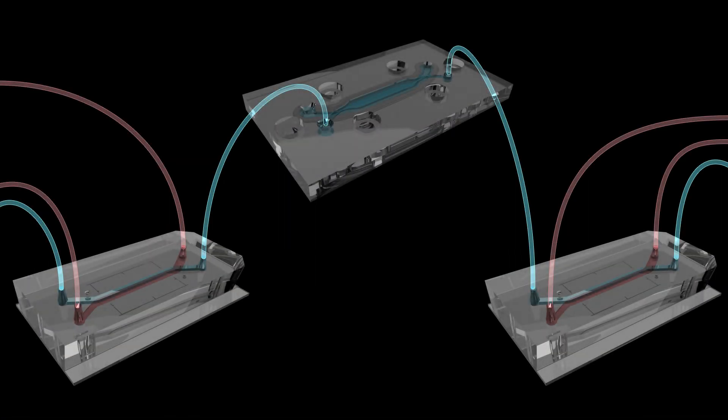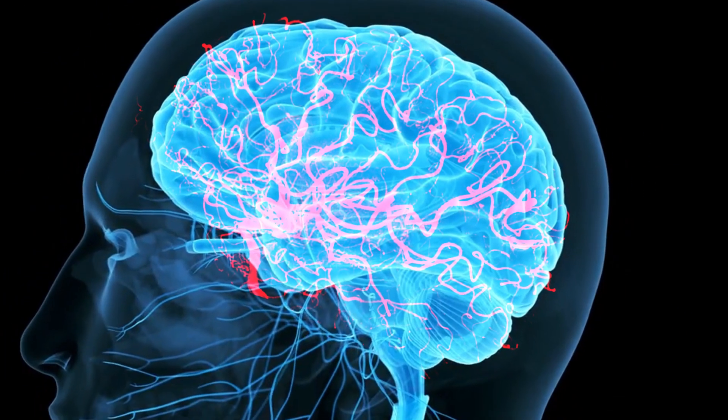Researchers are continuing to use this type of fluidically linked multi-organ chip system to uncover more about how the brain and other tissues and organs work at the molecular level.